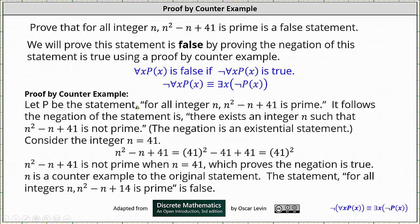To begin our proof, let P be the statement 'for all integers n, n squared minus n plus 41 is prime.' This is the original statement. It follows the negation of this statement is 'there exists an integer n such that n squared minus n plus 41 is not prime.' When we negate the original statement, notice 'for all integers n' changes to 'there exists an integer n,' and then we negate the statement 'n squared minus n plus 41 is prime,' which becomes 'n squared minus n plus 41 is not prime.' Recognizing this negation is an existential statement, we now look for a counterexample.